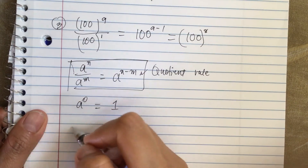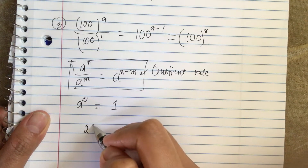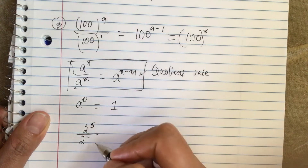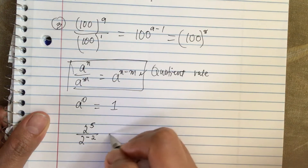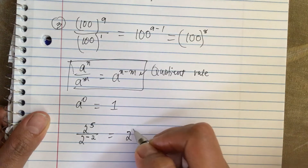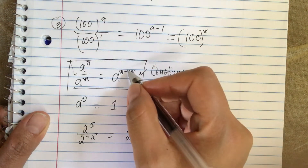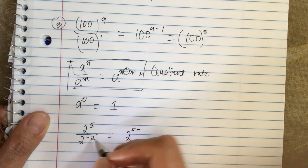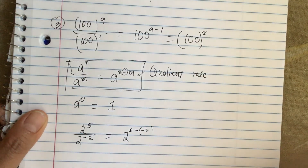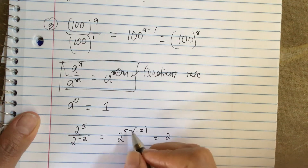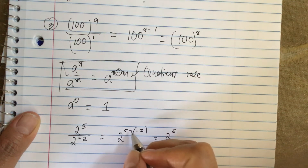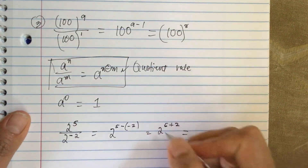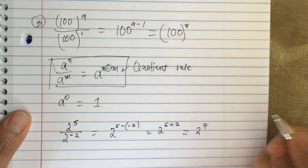Let's try this problem: if you have 2 to the fifth power divided by 2 to the negative 2 power. Applying the quotient rule, we have 2 to the fifth minus negative 2. There is a minus sign from the equation, and then minus negative 2, so the two minus signs become a plus. This gives us 2 to the 5 plus 2, which equals 2 to the 7.